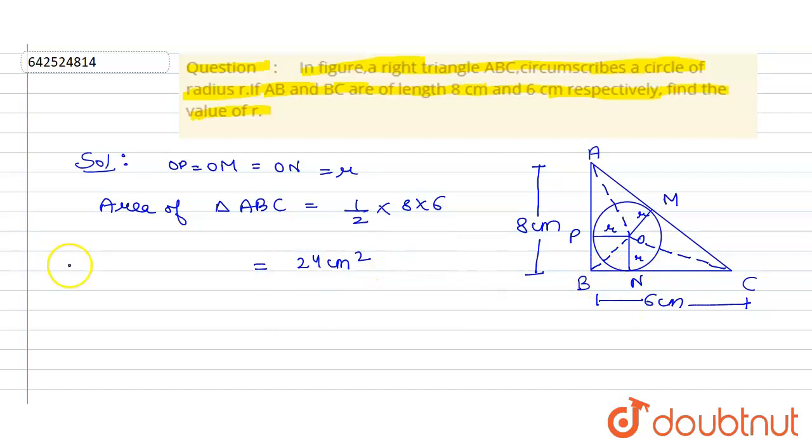By Pythagorean theorem, we have AC² = AB² + BC². So we will get CA² = 8² + 6².